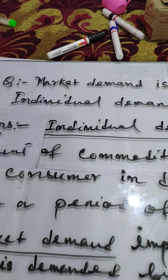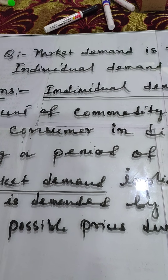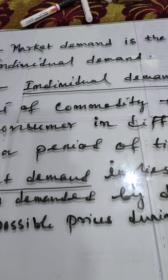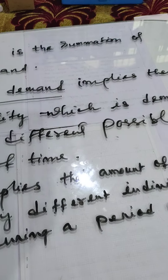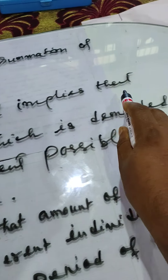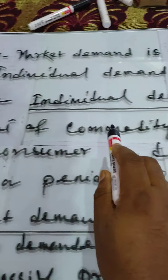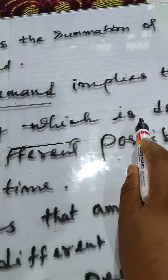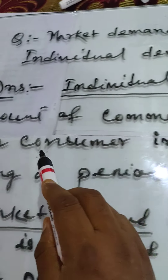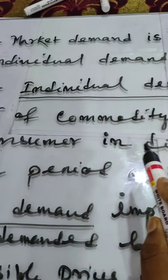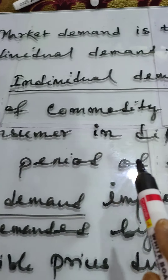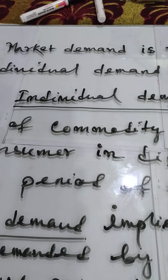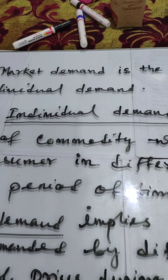Now we move to our question: market demand is the summation of individual demand. Before starting the topic, first you need to understand individual demand. Individual demand implies that amount of a commodity which is demanded by a consumer at different possible prices.